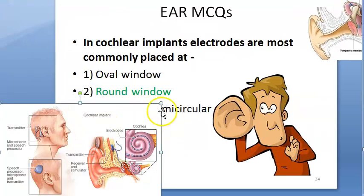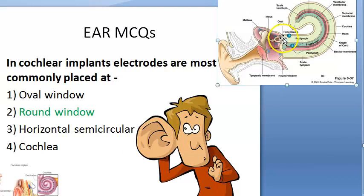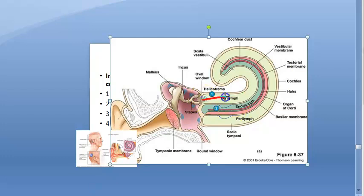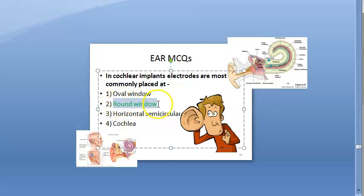The mechanism: stapes acts on the oval window, perilymph moves in the scala vestibuli, there is displacement of fluid in the scala media and the basilar membrane bulges towards the round window, scala tympani fluid also moves toward the round window — this is the traveling wave theory. So the round window is where the cochlear implant electrode is placed.